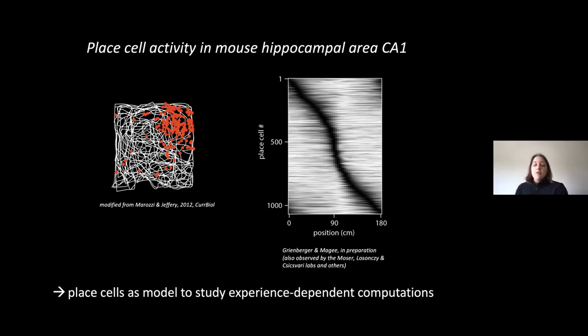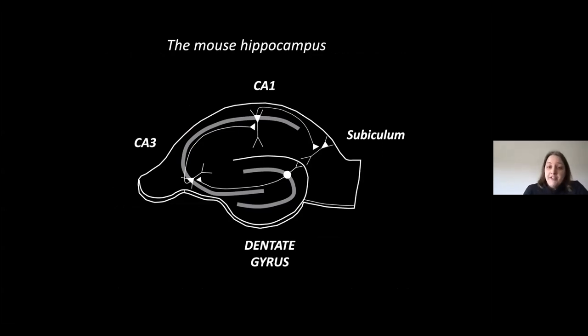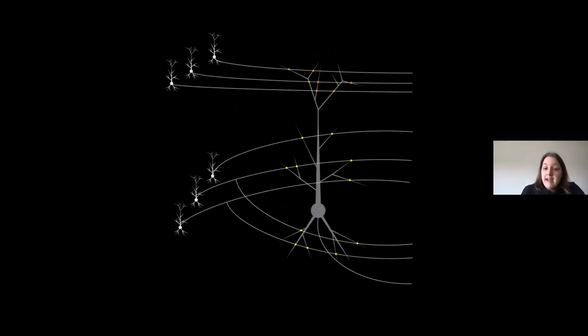Just to orient you briefly about the anatomy, CA1 is part of the mouse hippocampus, which is a three-layered structure located between cortex and thalamus. It has three major subregions: the dentate gyrus, the CA3 area, and the CA1 area. From an excitatory input perspective, each CA1 pyramidal cell has two major dendritic input compartments. The perisomatic compartment, which consists of the apical oblique dendrites and the basal dendrites, and which receives mostly intra-hippocampal input coming from CA3. The other compartment is the dendritic tuft up here, which receives long-range excitatory synaptic input coming mostly from layer 3 of the entorhinal cortex.